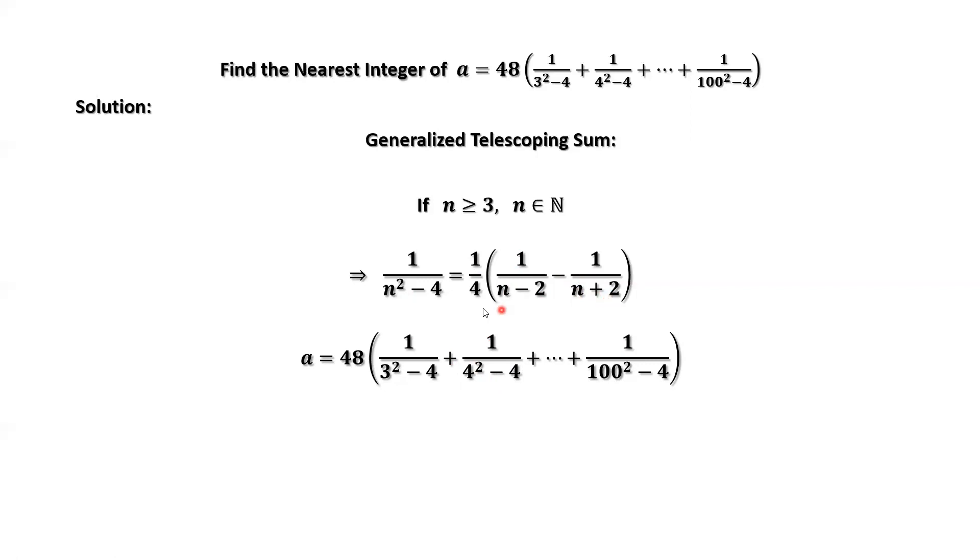Similarly, we can apply this formula for each term inside part of this parenthesis. The last one, n equals 100. The last term can be replaced by 1 over 4 times 1 over 100 minus 2 minus 1 over 100 plus 2.